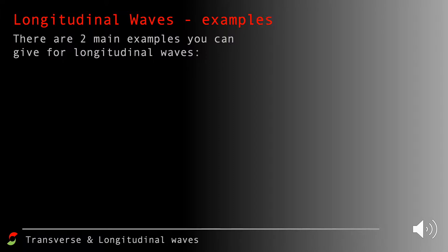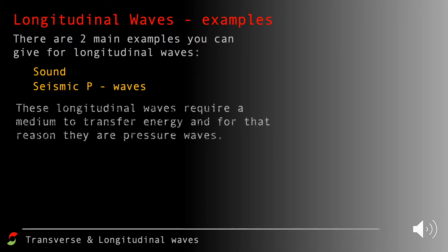Examples of longitudinal waves: the most common one is sound. There are also seismic P waves — waves produced after an earthquake — which are also longitudinal. P stands for primary. These longitudinal waves require a medium; without that medium you won't get a transfer of energy. For that reason, sound waves are often referred to as pressure waves because they involve regions of high pressure and low pressure.